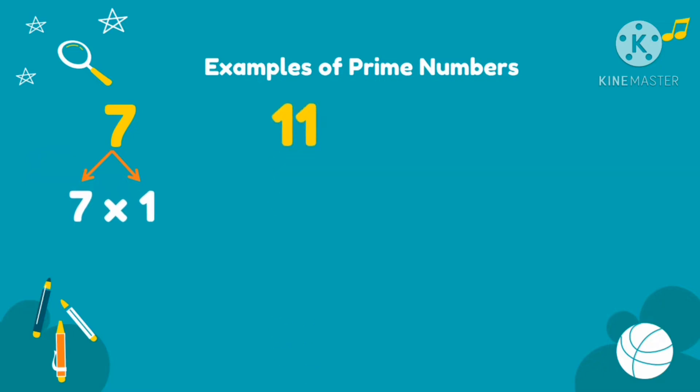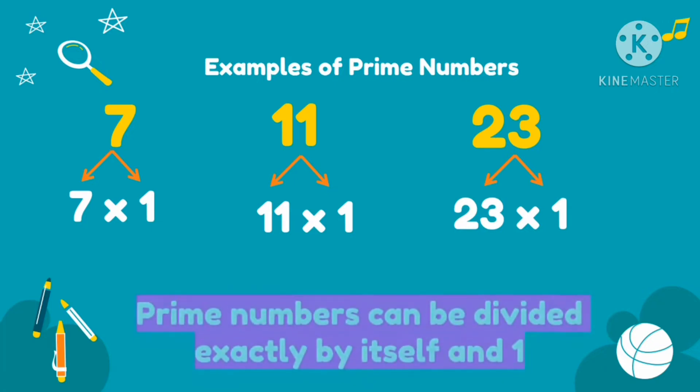Another example is 11. So another example of prime number is 11 because the factors of 11 is 11 times 1. Then, 23. So the factors of 23 are 23 times 1. So if you notice, the factors of prime numbers are 1 and itself.